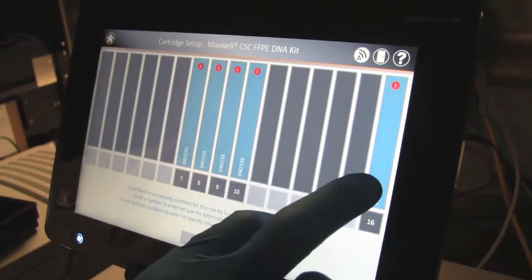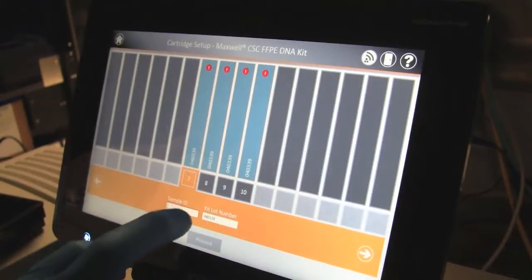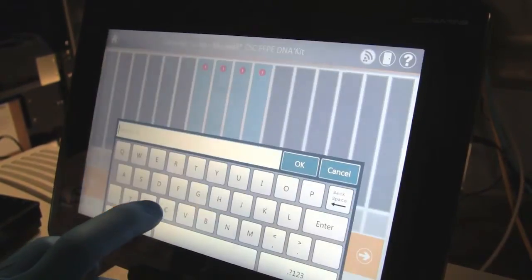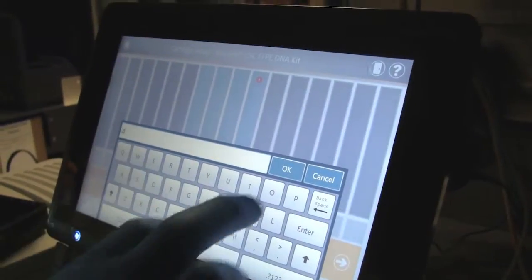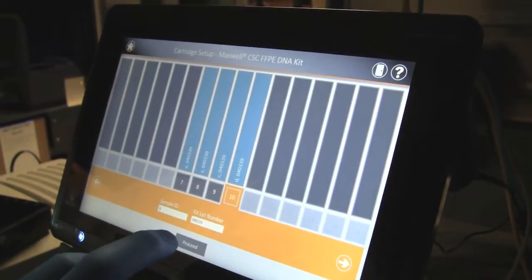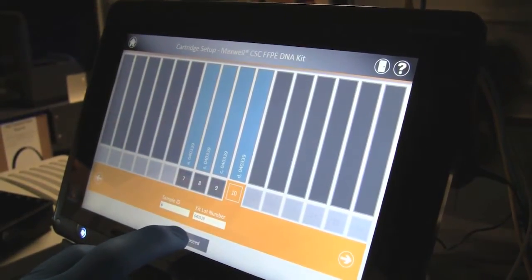Select the cartridge positions to be run and scan or manually enter the sample tracking information. Deselect any unused portions. Select Proceed when ready.